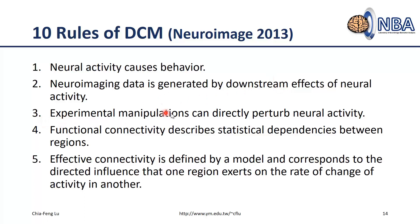Rule 3: experimental manipulations can directly perturb or change neural activity — if your design cannot induce any change, your DCM model may fail. Rule 4: functional connectivity describes statistical dependence between regions. Rule 5: effective connectivity (also called directional or causal connectivity) is defined by a model and corresponds to the directed influence that one region exerts on the rate of change of activity in another — one region can cause neural state or BOLD signal changes in another region.